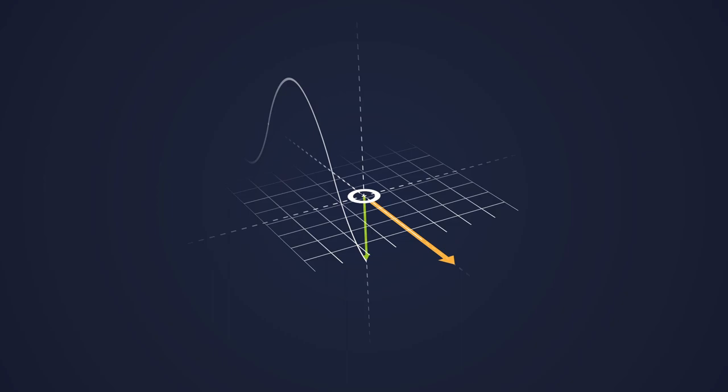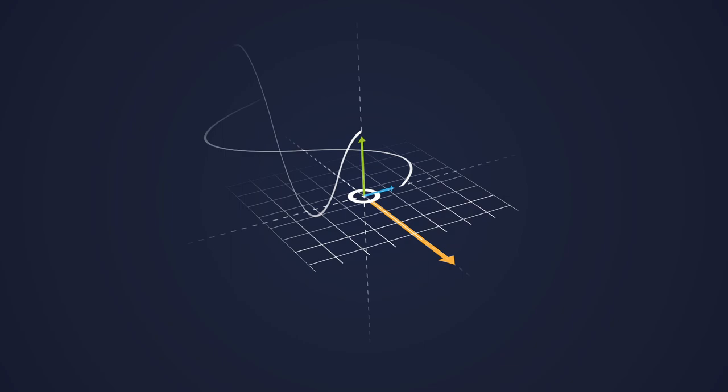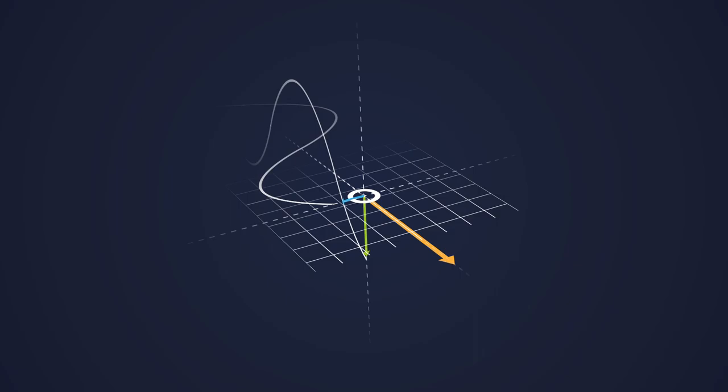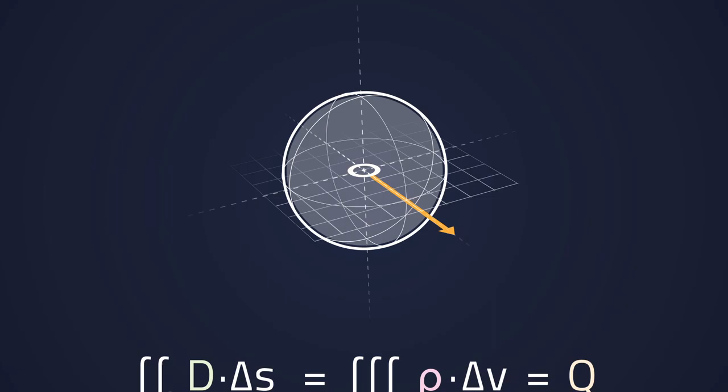Vector fields depend on space and time. At each point in space there exists one electric field vector and one magnetic field vector pointing in a certain direction. The length and direction of the vectors change continuously.